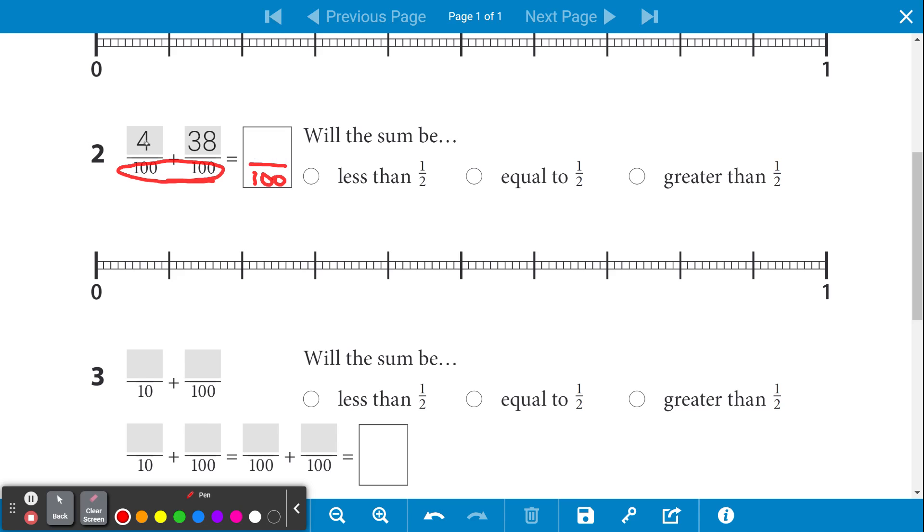When you add 8 and 4, you get 12. The 1 carries and adds to the 3 to make it 42.